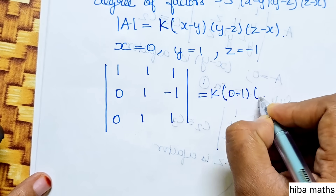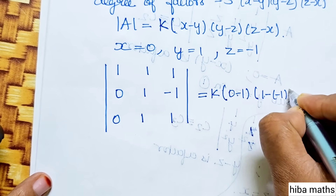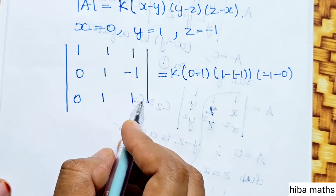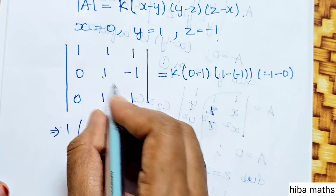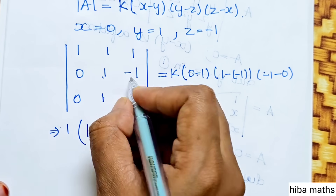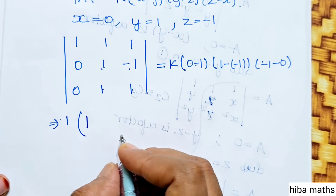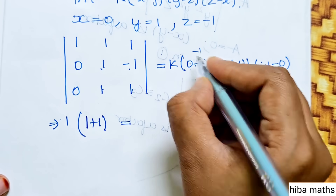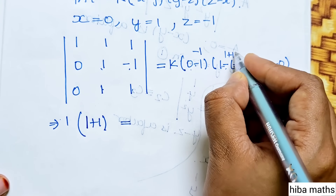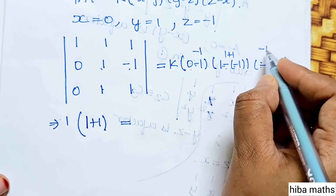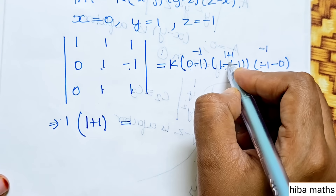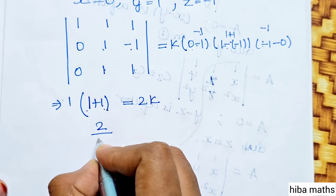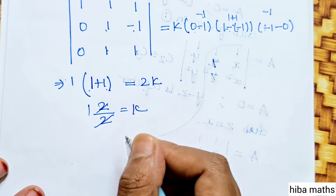This equals k into x minus y: 0 minus 1 equals minus 1, then y minus z: 1 minus minus 1 equals 2, then z minus x: minus 1 minus 0 equals minus 1. Expanding: 1 into 1 minus minus 1 is 2, minus 1 into minus 1 plus 1 is minus 1 times... 2 equals k, so k value is 1.